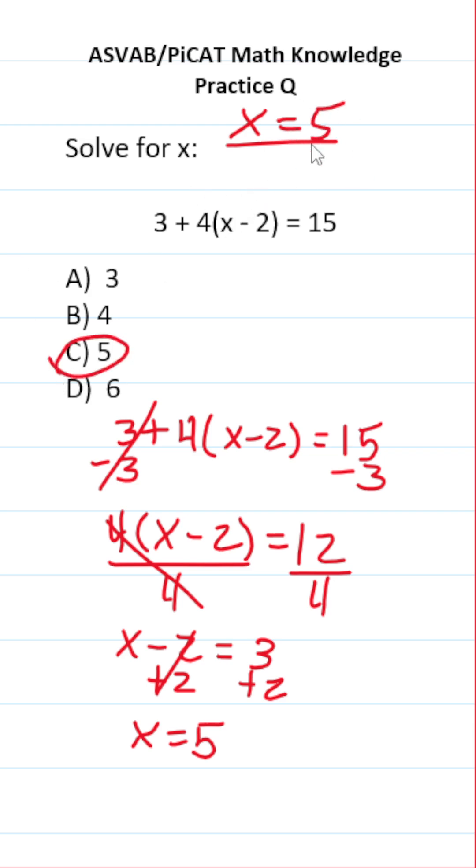That said, you always want to check your work. We're going to go ahead and plug in 5 in the original equation and see if it makes a true mathematical statement. This becomes 3 plus 4 times 5 minus 2 equals 15.